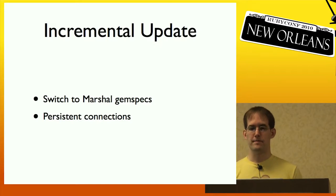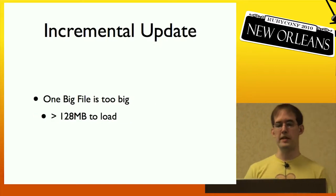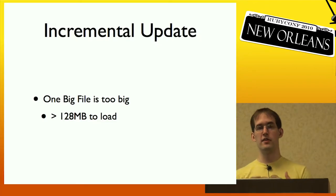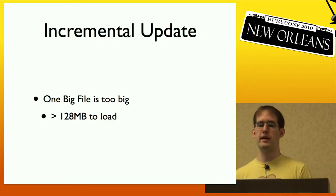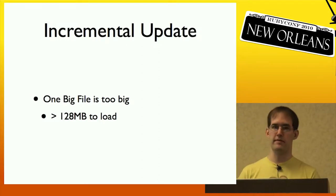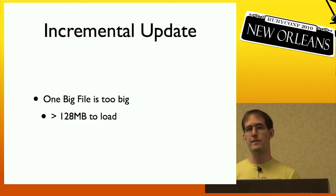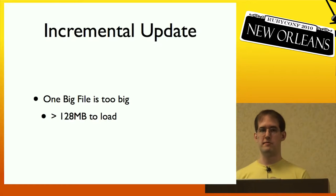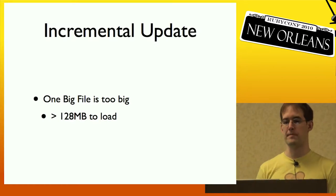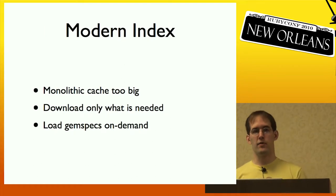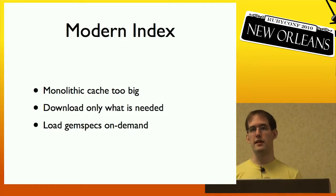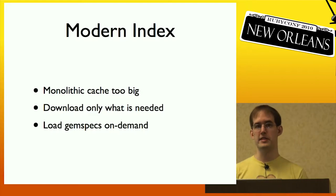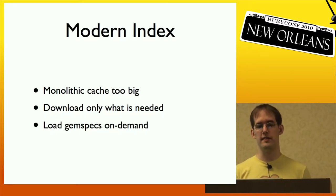But this still wasn't enough. The one file was still too big, because on the client side you'd still have to load this giant file to figure out all the dependencies to install the gem. For small virtual servers — a 128-megabyte virtual server was pretty popular back then — this would bring the virtual server to its knees, because it would take more than 128 megabytes just to install the gem. So I replaced that with the modern index: the monolithic cache file is too big, so RubyGems would instead download only the files it needed, and then load just the gem specs it needed on demand, vastly reducing its memory footprint.